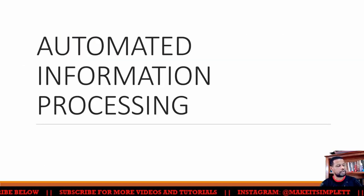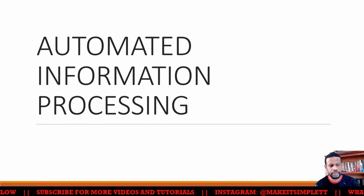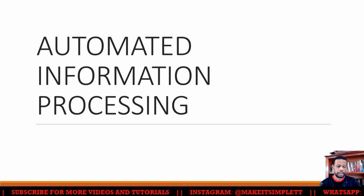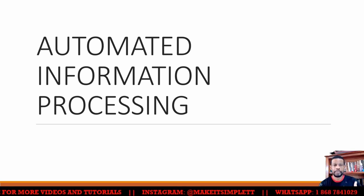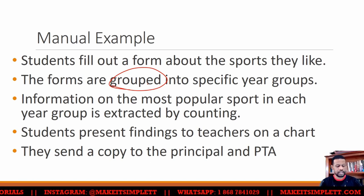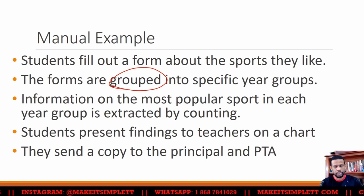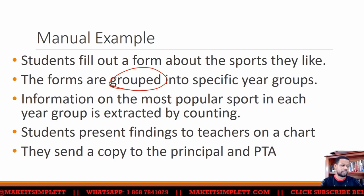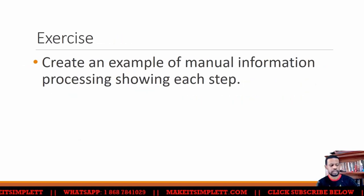because somebody had to actually read through all of the forms to find the information that you need. Automatic processing now would be using a computer or computer systems to remove the human interaction, or remove the human errors that would happen. Humans will definitely make mistakes — for example, somebody in the process of grouping could mix up people who play football and people who play cricket. That would be a problem, so you don't want that to happen.